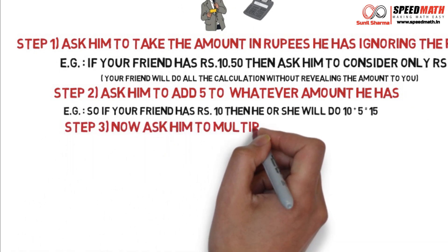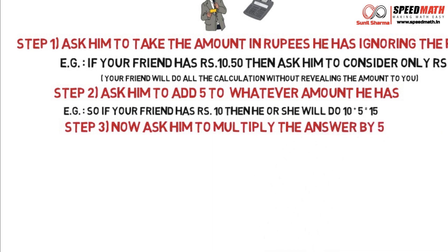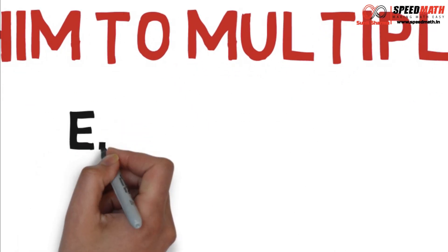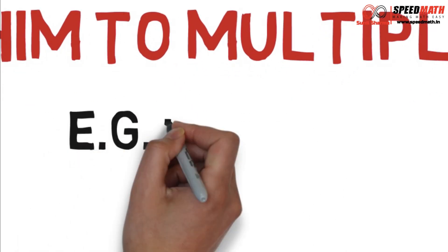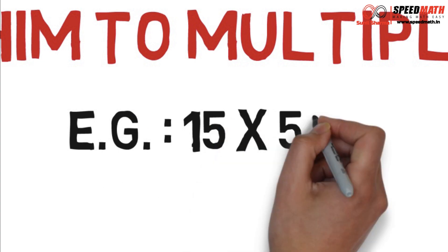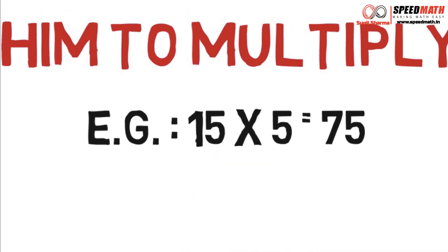Step 3: Now ask him to multiply the answer by 5. So whatever answer he has in the calculator, ask him to multiply it by 5. In our example we had 15, so 15 multiplied by 5 gives you 75.